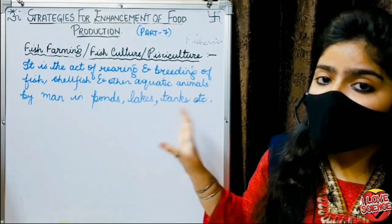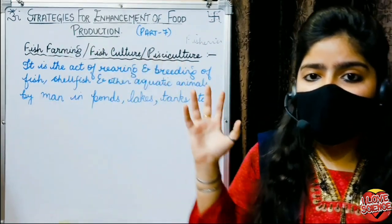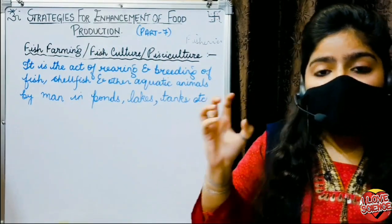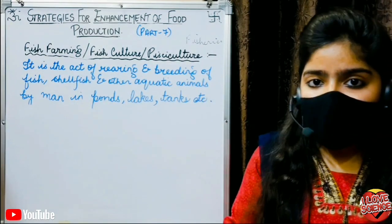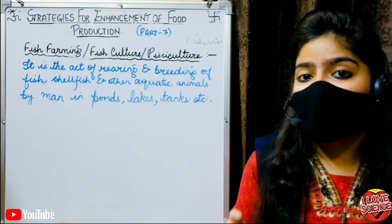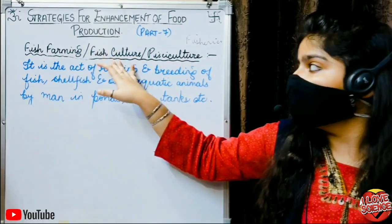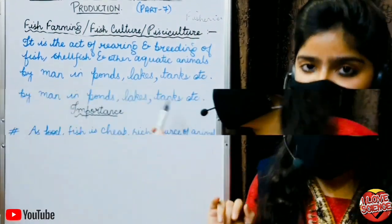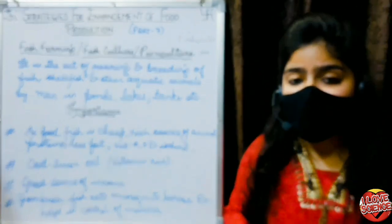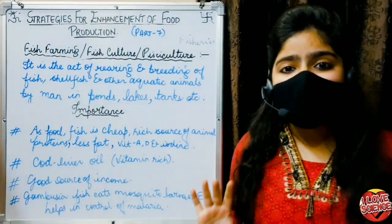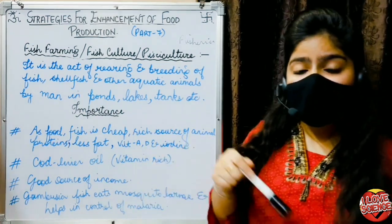We can collect them in ponds, lakes, tanks, and small water bodies and domesticate them, which is called fish farming, fish culture, and fisheries. These fish are very easily available, and everyone can sell them because they are cheap and very easily available.